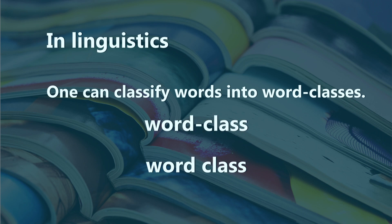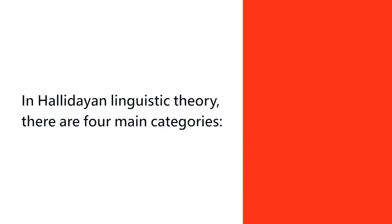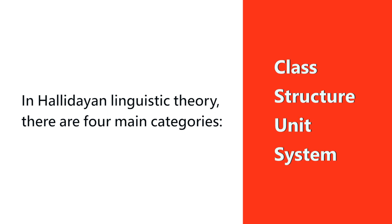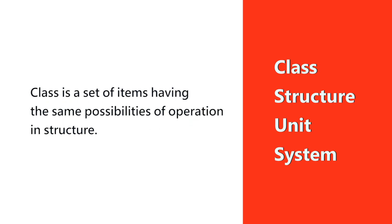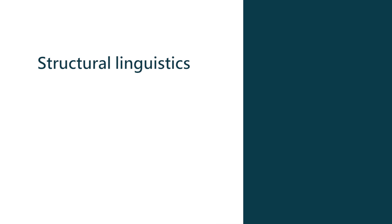In Halliday's linguistic theory, there are four main categories: class is one of them, and the other three are structure, unit, and system. In this theory, class is a set of items having the same possibilities of operation and structure. For example, there is a class of nominal groups that can operate as subject, object, etc. in clause structure.